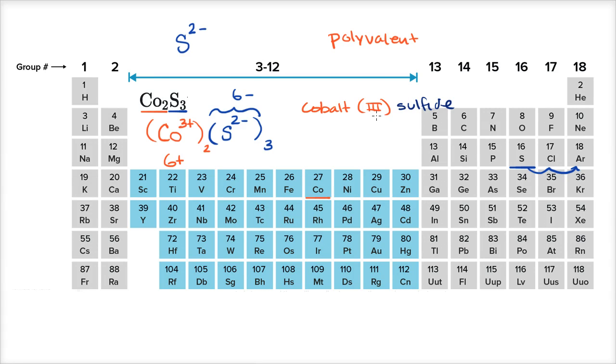We would call this cobalt three sulfide. You could have other ionizations of cobalt in other ionic compounds. But this one is cobalt three sulfide. And you could go either way. If the cobalt has a charge of three plus, you could figure out its formula. Or as we just did in this video, you could go from the formula to the actual name.